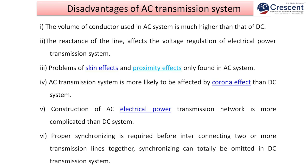Disadvantages of AC transmission system: the volume of conductors used is much higher than DC; the reactance of the line affects voltage regulation; problems of skin effects and proximity effects are only found in AC systems; AC transmission is more likely to be affected by corona effect than DC; construction of AC electrical power transmission networks is more complicated than DC; proper synchronization is required before integrating two or more transmission lines together, whereas synchronizing can be totally omitted in DC transmission systems.